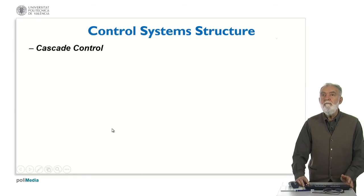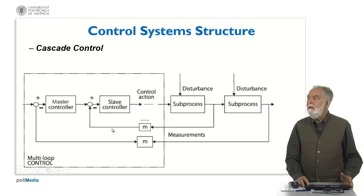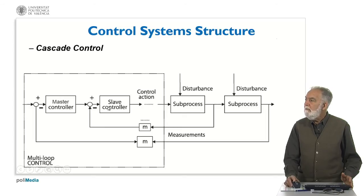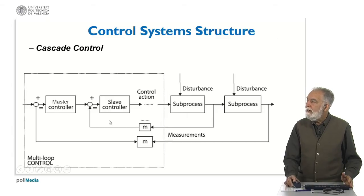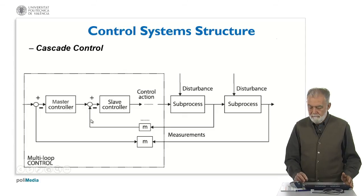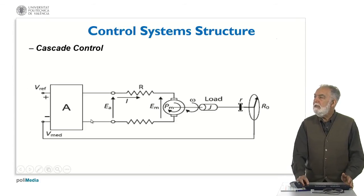We may have many measurements to control one variable. In that case, if we consider the system with different processes and different disturbances, and if we have some internal measurement, we can act on the control action without waiting for an error appearing at the output. This is what we call cascade control. There are loops of control: the slave controller is measuring this internal variable and acting on the control action, but the final control is done by the master controller.